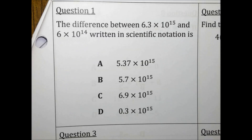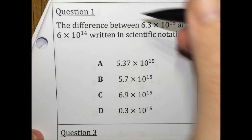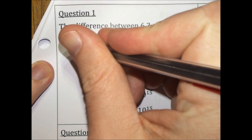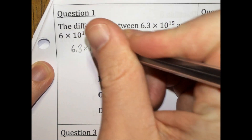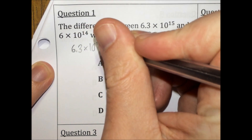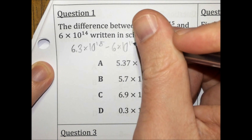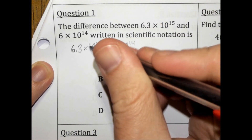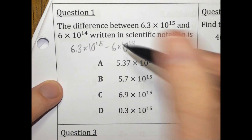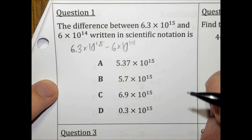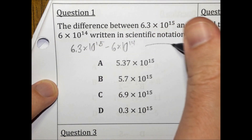Find the difference between 6.3 times 10 to the 15th and 6 times 10 to the 14th, written in scientific notation. Difference means subtract, so we need to subtract these numbers. When you subtract numbers in scientific notation, the exponents have to match.